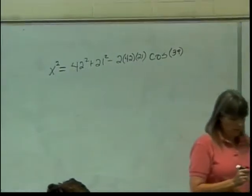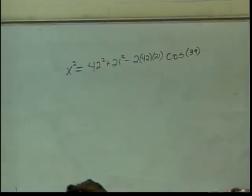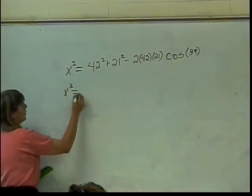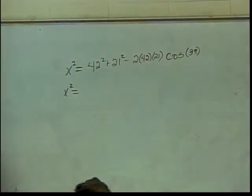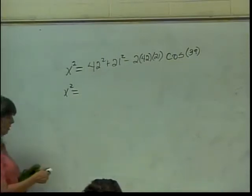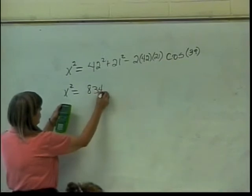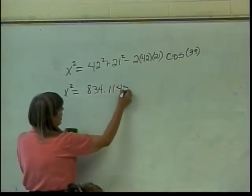Alright, now we plug all that into our calculator and we get x squared equals 42 squared plus 21 squared minus 2 times 42 times 21 times cosine of 39. 834.114524.